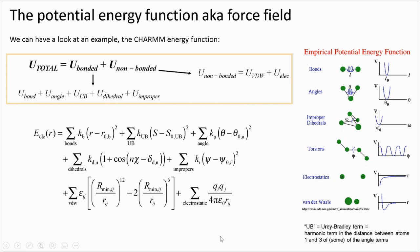The best way I can explain a potential energy function is by having a look at an example, such as the CHARMM force field. Here we can see that according to the CHARMM force field, the total energy of an atom consists of its energy associated with the bonding and the non-bonding interactions.